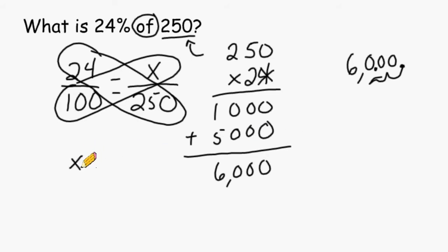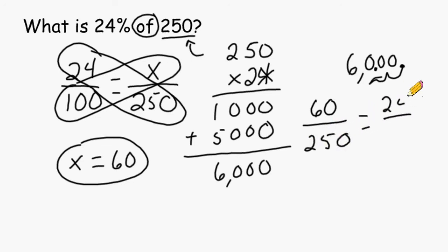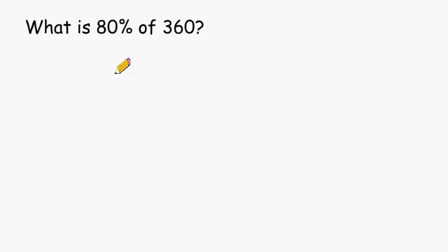So we would say that 6000 divided by 100 is equal to 60. So x is equal to 60. That just means that 60 out of 250 is an equivalent rate as compared to 24 out of 100. And that is why 60 out of 250 is equal to 24%. Let's try another example. For this example, we have to figure out what 80% of 360 is.